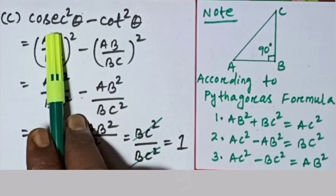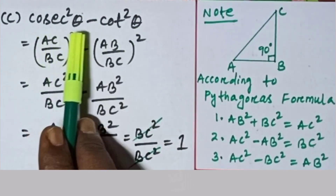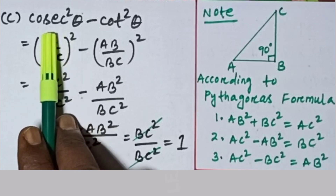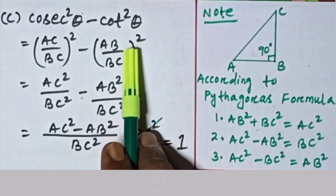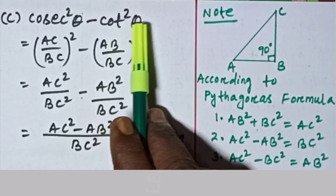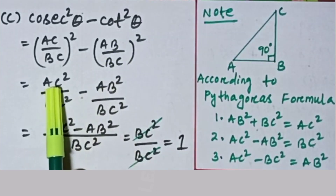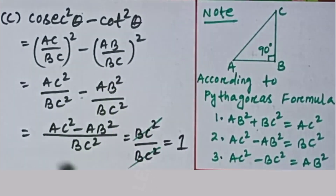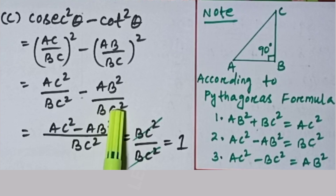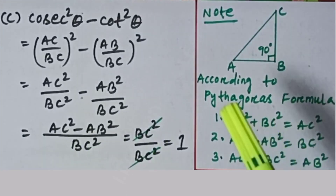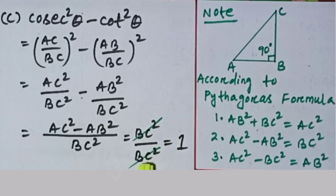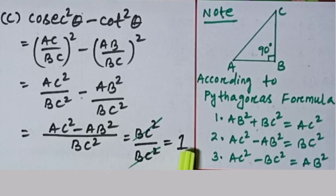Proof of the third square relation: cosec²θ − cot²θ. Cosec θ = AC/BC, so cosec²θ = (AC/BC)². Cot θ = AB/BC, so cot²θ = (AB/BC)². Subtracting: (AC² − AB²)/BC². By Pythagoras theorem, AC² − AB² = BC², so BC²/BC² = 1. Hence cosec²θ − cot²θ = 1. Now we will see the quotient relations.